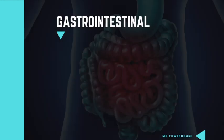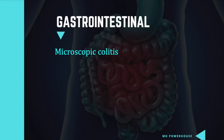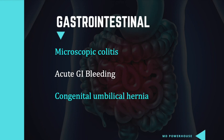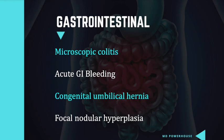In the gastrointestinal system, the updates include microscopic colitis, acute gastrointestinal bleeding, congenital umbilical hernia, and focal nodular hyperplasia. It's also worth noting that not only were updates and changes made, but they also removed certain sections — some topics and even some graphics were taken out. Now let's move on to hematology.